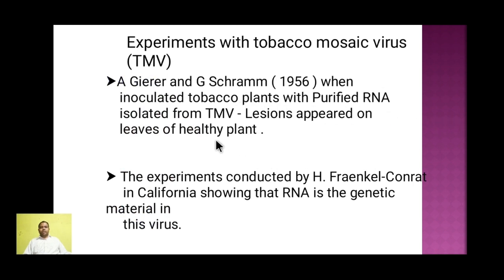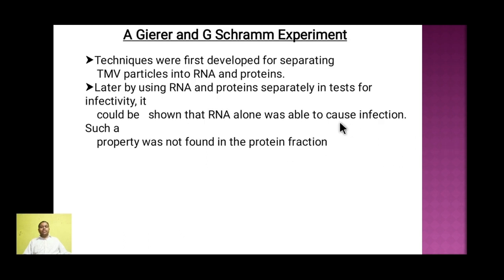There were two major experiments that suggested RNA can also act as a genetic material. The first was by Gierer and Schramm in 1956. When they inoculated tobacco plants with purified RNA, isolated TMV lesions appeared on the healthy leaves. They isolated the TMV from the plants and were able to separate it into proteins and RNA. They used RNA and protein separately in different tests to check infectivity to the tobacco plant, and RNA alone was able to cause the infection. But at this stage, it was still not conclusively proven that RNA acted as a genetic material.